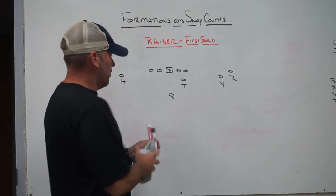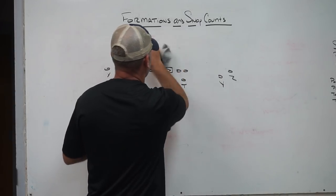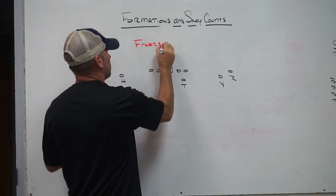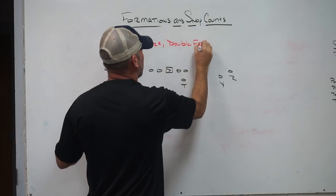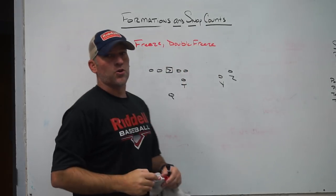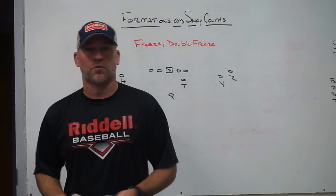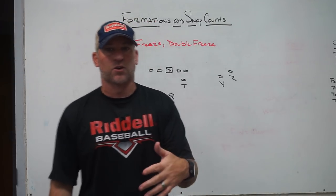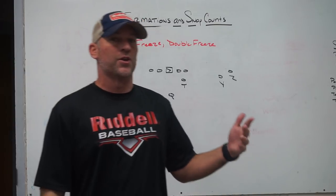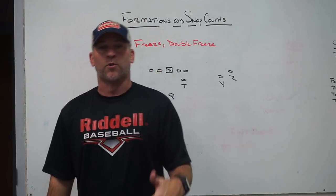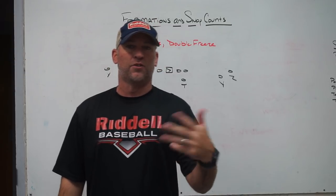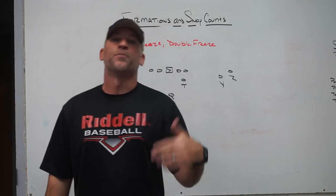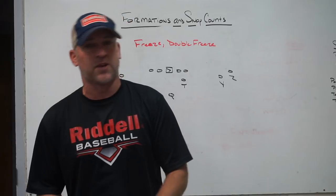We also have 'freeze' and 'double freeze' — that's how we control snap counts and cadence. Freeze is a call or signal coming from the sideline; double freeze is also a call or signal from the sideline. So now we have formations that snap on one, formations that snap on first sound, and freeze and double freeze — giving us the ability to change the snap count so kids know what's coming while slowing down the other team.